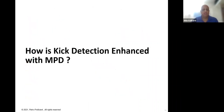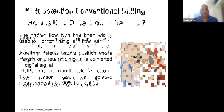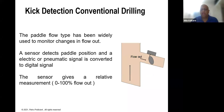How is kick detection accomplished? MPD is sometimes used as a tool to detect kicks. The MPD process has a built-in kick detection system that provides warning of any influx. In conventional drilling setup, there is a flow paddle used to monitor flow out — this paddle detects an increase in flow and converts it to a 0–100% signal. A dial gauge on the rig shows increase and decrease in flow.